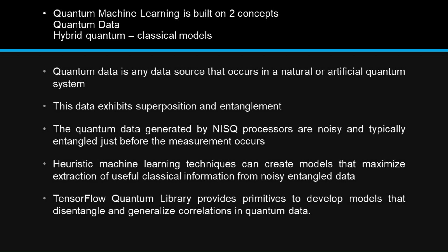Quantum machine learning is built on two concepts: quantum data and hybrid quantum-classical models. Quantum data is any data source that occurs in a natural or artificial quantum system — this data exhibits superposition and entanglement. The quantum data generated by NISQ processors is noisy and typically entangled just before measurement occurs. Heuristic machine learning techniques can create models that maximize extraction of useful classical information from noisy entangled data. The TensorFlow Quantum library provides primitives to develop models that disentangle and generalize correlations in quantum data.